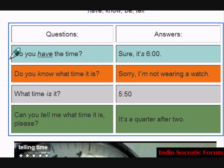Question 1: Do you have the time? Sure, it's 6:00. So one way of asking what the time is: Do you have the time? If you have a watch, you will look at your watch and say something like, sure, it's 6:00.